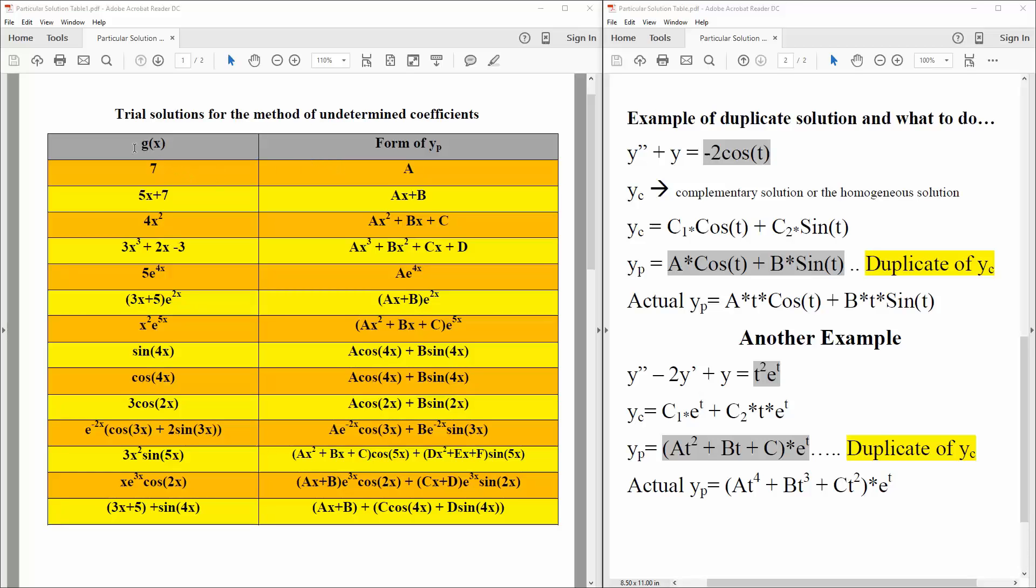So this is g(x) and this is what we should guess our y_p should be. So if g(x) is 7, we say y_p is equal to a. 5x plus 7, we would get ax plus b. 4x squared, we would get ax squared plus bx plus c. Now we have a cubed root, so we get ax cubed plus bx squared plus cx plus d.